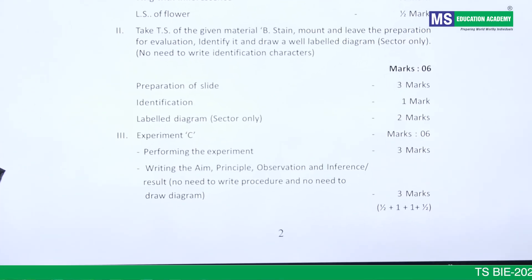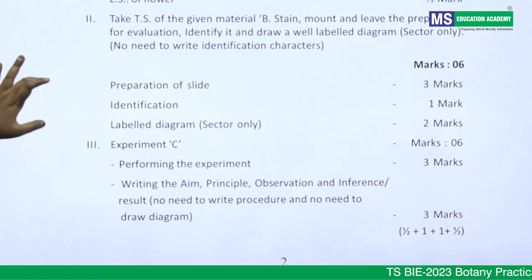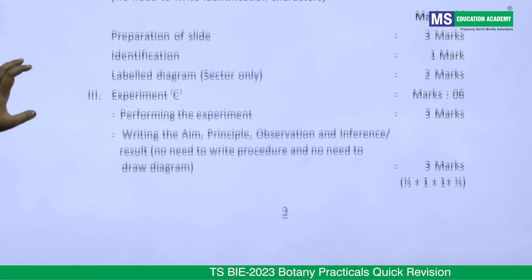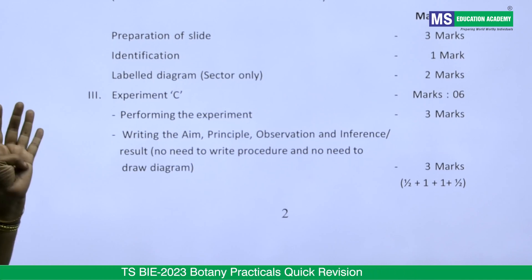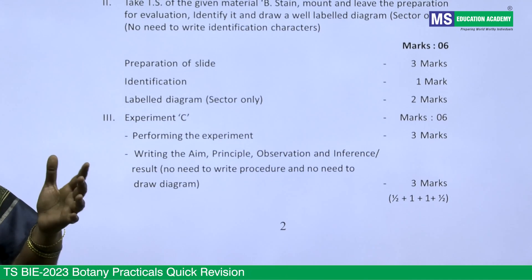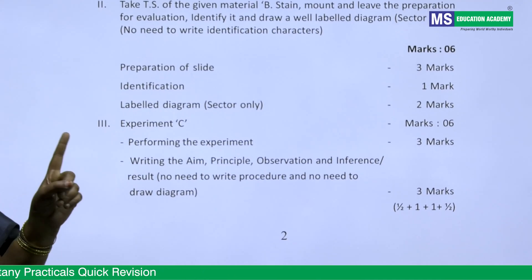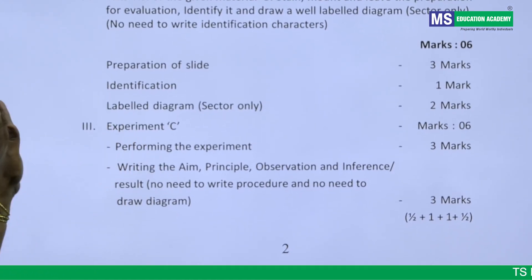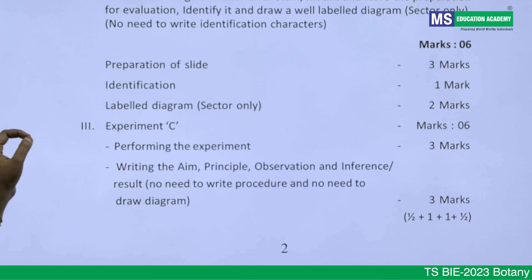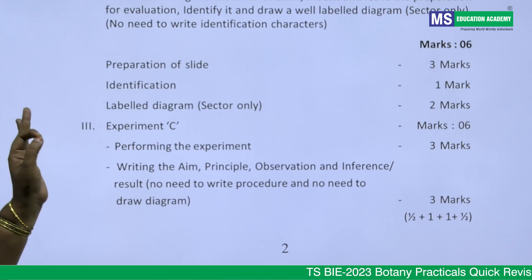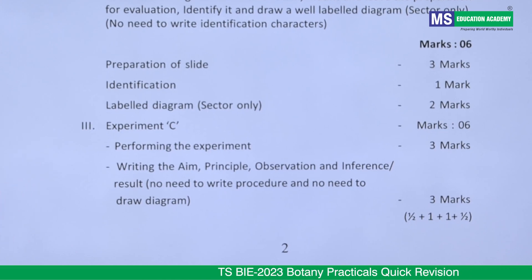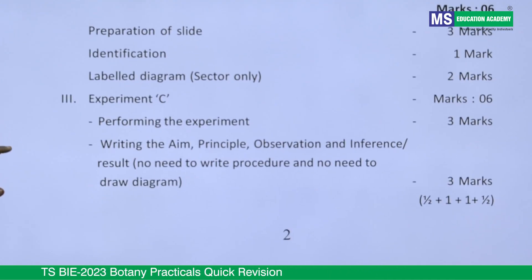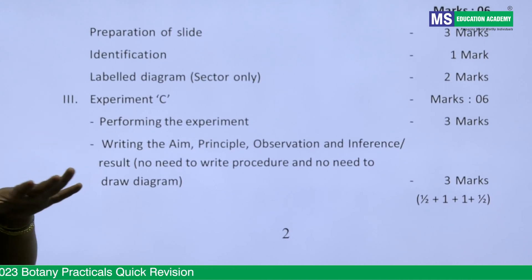The third session is performing an experiment — this is the major one but involves very simple experiments. You need to write the aim and the principle. Do not waste time writing the procedure; just write what you have observed. This session also gives six marks. So totally three sessions times six marks equals eighteen marks from your writing and practical part.